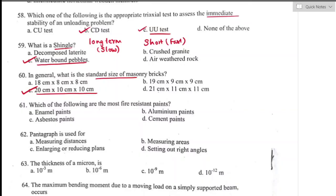Question number sixty-one: the more fire resistant paint is asbestos paint. Option C is the right answer. Asbestos is fire resistant due to its chemical properties — it is non-flammable, non-combustible, and has a high melting point of around 1600°F. Thus asbestos paint is the best fire resistant paint among the given options.